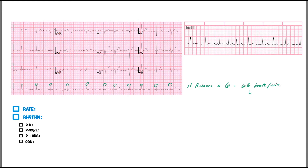One thing you really want to remember: this is the ventricular rate. This can sometimes confuse people who assume it's the atrial rate — no, this is the ventricular rate because we're tracking off the R waves. If I wanted to determine the atrial rate, I'd have to measure from P wave to P wave. So we have a ventricular rate of about 66 beats per minute.